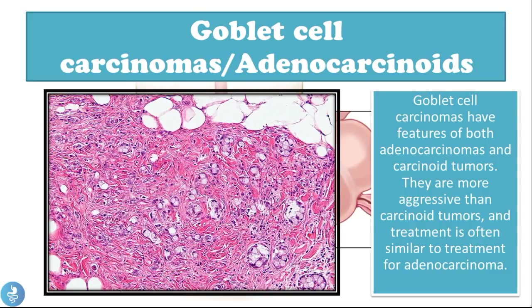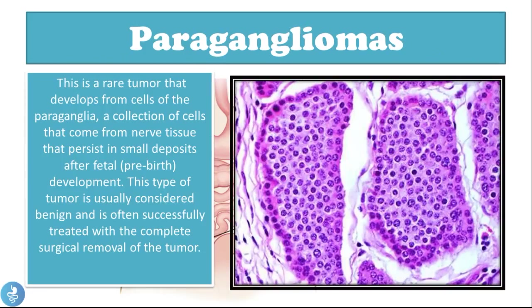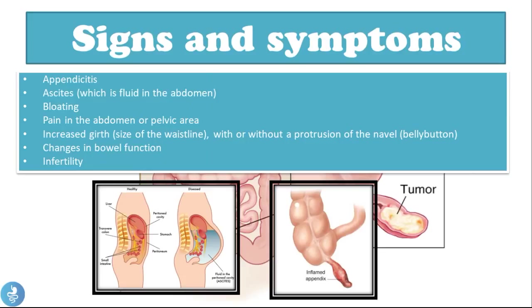Goblet cell carcinomas, or adenocarcinoids, have features of both adenocarcinomas and carcinoid tumors. They are more aggressive than carcinoid tumors, and treatment is similar to that for adenocarcinomas. Finally, paragangliomas are rare tumors that develop from cells of the paraganglia — a collection of cells from nerve tissue that persist in small deposits after fetal development. This type of tumor is usually considered benign and is often successfully treated with complete surgical removal.